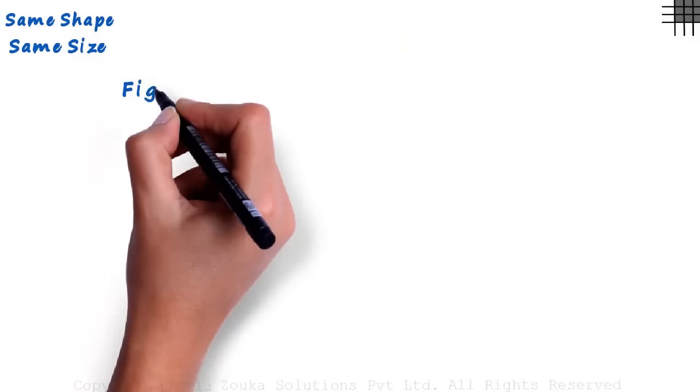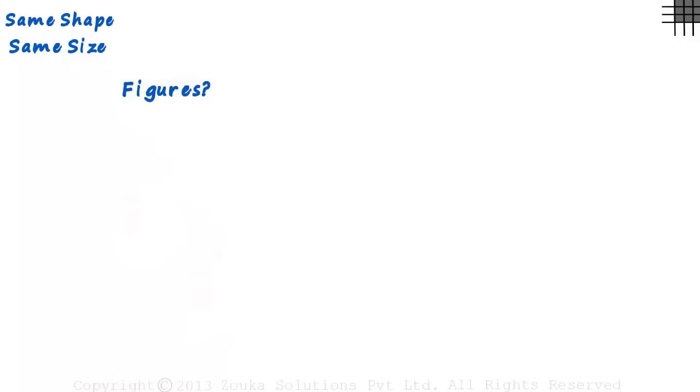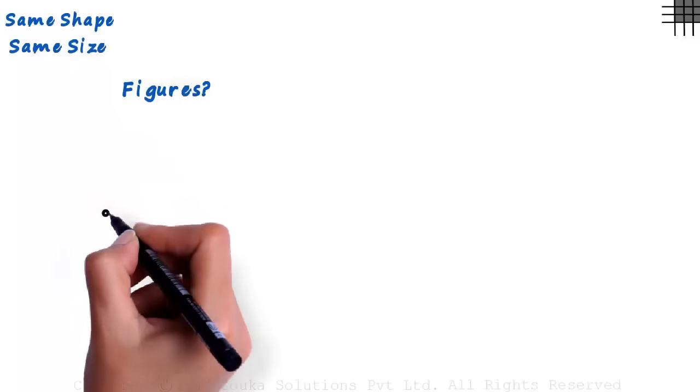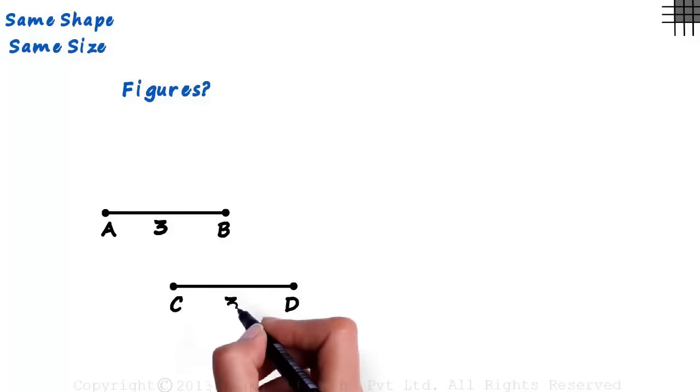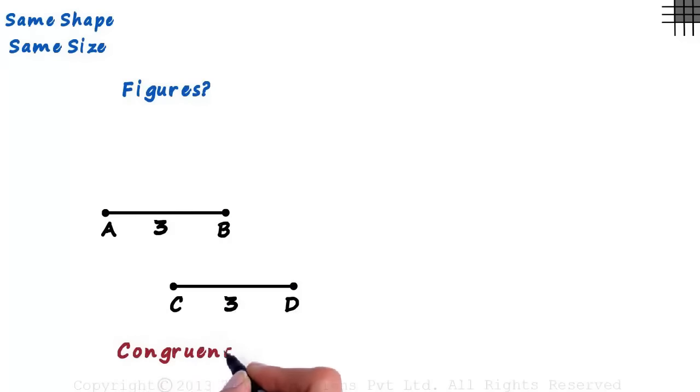Is it only figures that can be congruent? Consider two segments, segment AB and segment CD. Both measure three units. Can we say that they are congruent? Of course we can. Segment AB is congruent to segment CD.